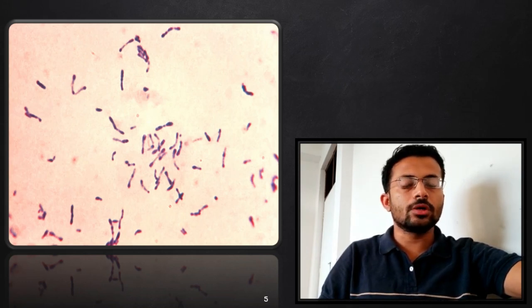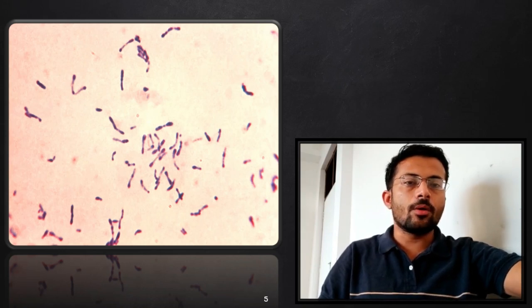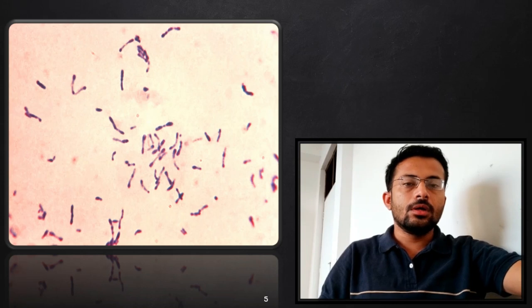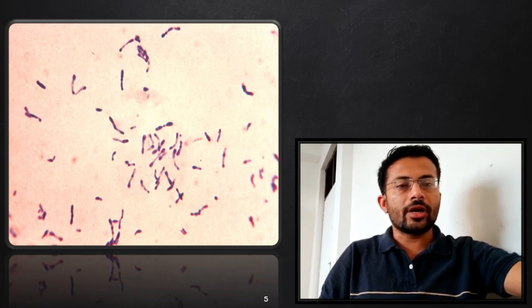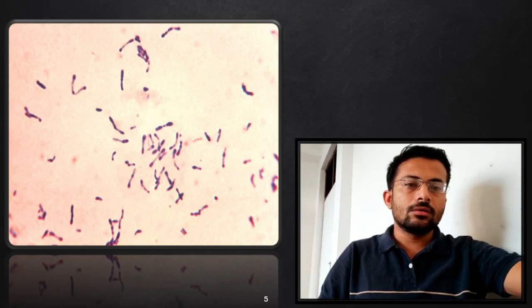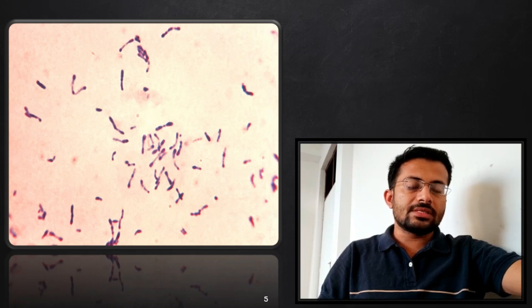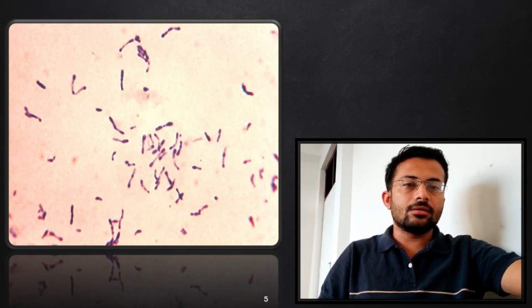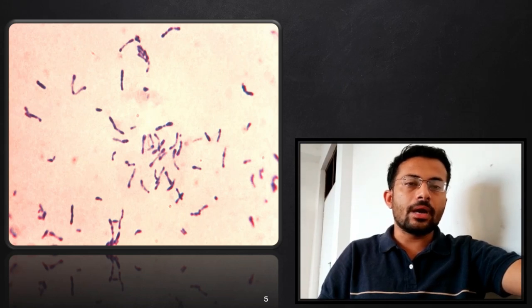So, aam sabne diphtheria ka naam sunaa. So, diphtheria, nowadays this is a very common disease caused by one of the most famous bacteria that is Corynebacterium diphtheriae. This bacteria possess some basic characteristics like that is gram positive, non-motile as well as aerobic bacteria.